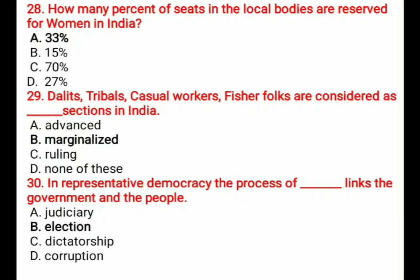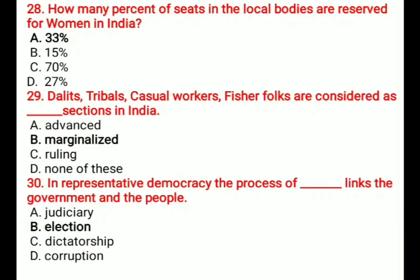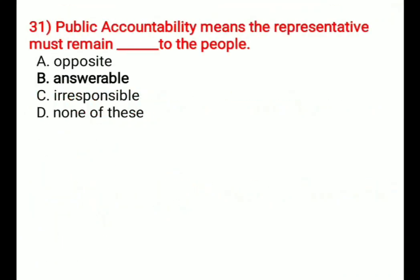Question 30: In representative democracy, the process of which links the government and the people? Options are: A) Judiciary, B) Election, C) Dictatorship, D) Corruption. The correct answer is B, Election — through the election process, the link between government and people is established.